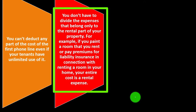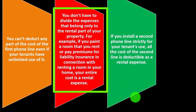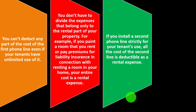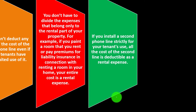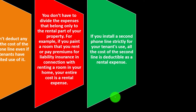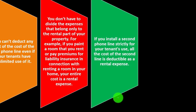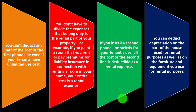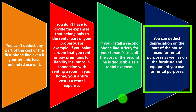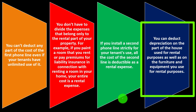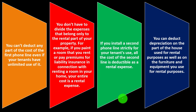You can't deduct any part of the cost of the first phone line, even if your tenant has unlimited use of it. You don't have to divide expenses that belong only to the rental part of your home. For example, if you paint a room you rent or pay premiums for liability insurance in connection with renting a room in your home, your entire cost is a rental expense. If you install a second phone line strictly for your tenant's use, all the cost of the second line is deductible as a rental expense. You can also deduct depreciation on the part of the house used for rental purposes, as well as on furniture and equipment used for rental purposes.